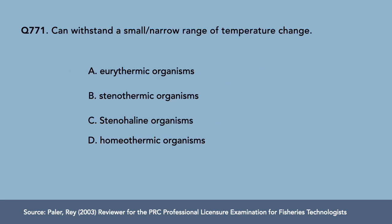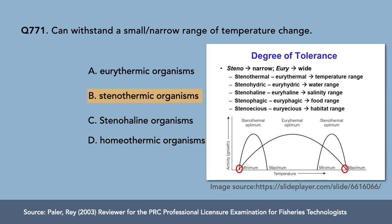Question 1: Which organisms can withstand only a small or narrow range of temperature change? A) eurythermic organisms, B) stenothermic organisms, C) stenohaline organisms, D) homeothermic organisms. The correct answer is letter B, stenothermic organisms.